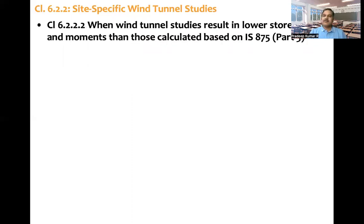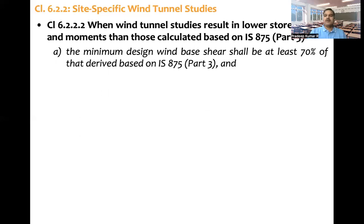When wind tunnel studies result in lower storey shears and moments than those calculated based on IS 875 Part 3, the code suggests the minimum design base shear shall be at least 70% of that derived based on 875. If wind tunnel tests are giving lower values, we cannot go lower than 0.7 times the value found using 875.